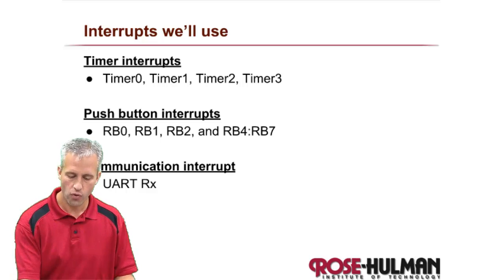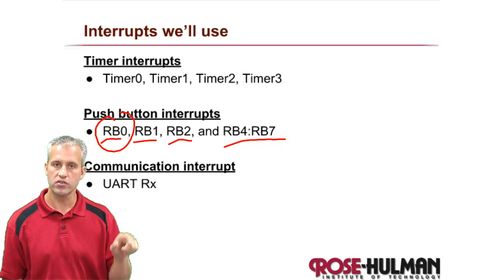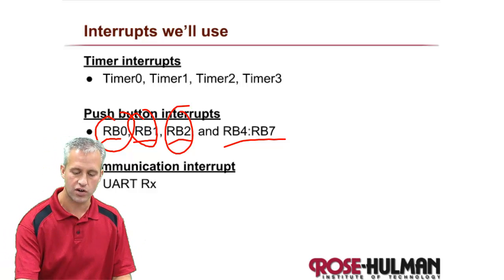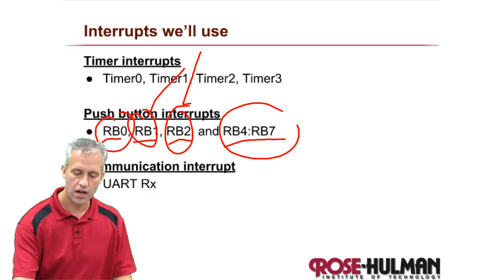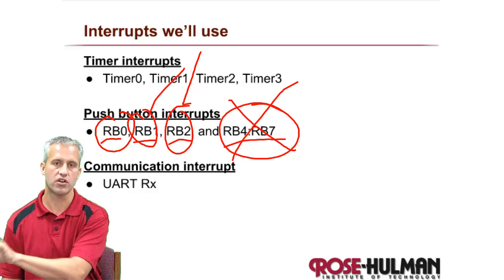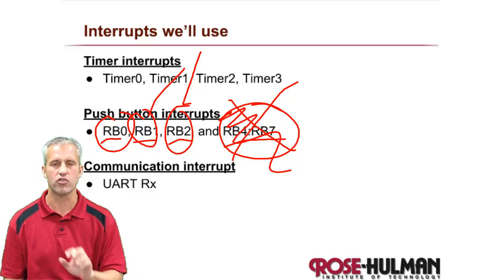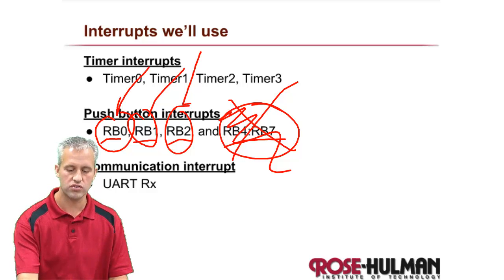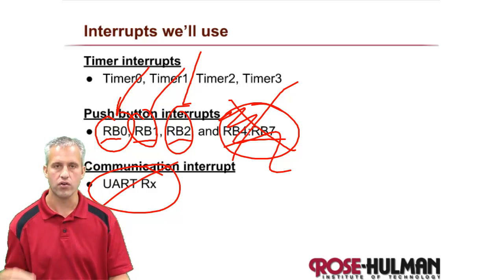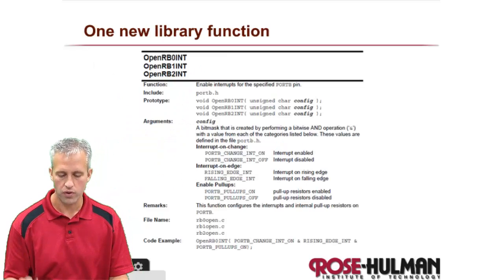There are technically four different interrupts with pushbuttons. One is on RB0, then there's also RB1 and RB2 — those are the three we care about. There's also one on RB4567 where any change calls the interrupt, but we're not going to focus on that since other microcontrollers don't do anything like that. We're going to focus on just these three pushbutton interrupts. In another lecture, we'll also talk about UART communication and its interrupt.